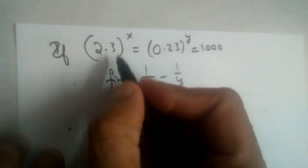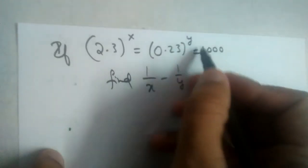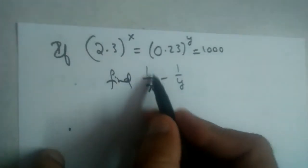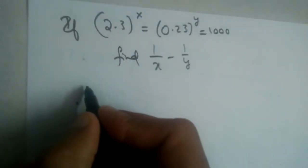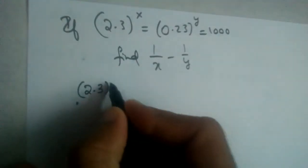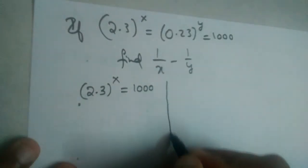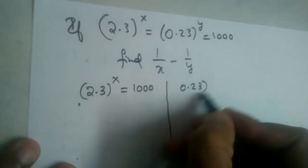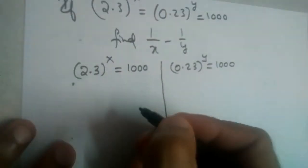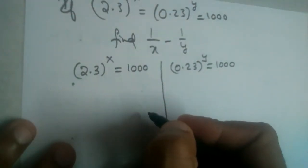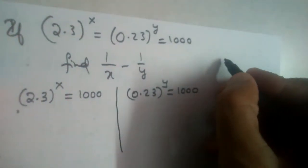If 2.3 whole power x is equal to 0.23 whole power y is equal to 1000, find 1/x minus 1/y. So here what is given: 2.3 whole power x is equal to 1000, and 0.23 whole power y is equal to 1000.